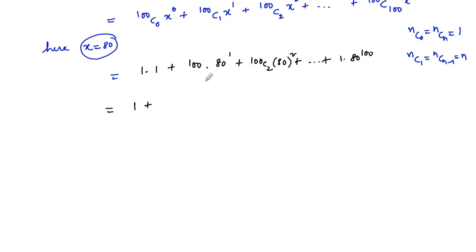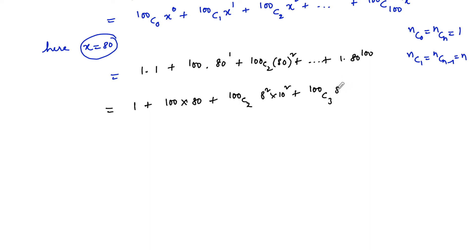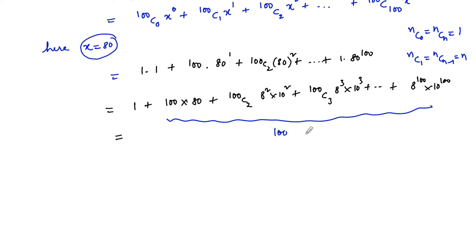Evaluating: 1 × 1 = 1, plus 100 × 80 = 8000. For the second term onward, we can factor. 100C2 × 80^2 can be written as 100C2 × 8^2 × 10^2, and 100C3 × 80^3 = 100C3 × 8^3 × 10^3, and so on up to 8^100 × 10^100. We can clearly see that from the second term to the last term, 100 can be taken as a common factor — all those numbers are multiples of 100.